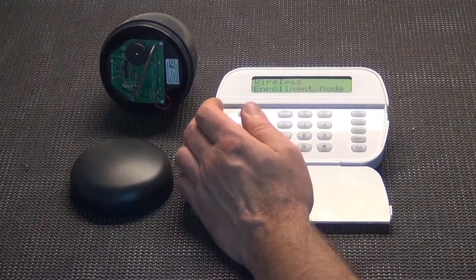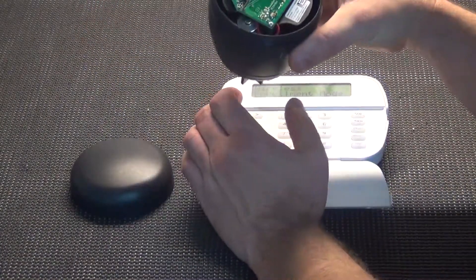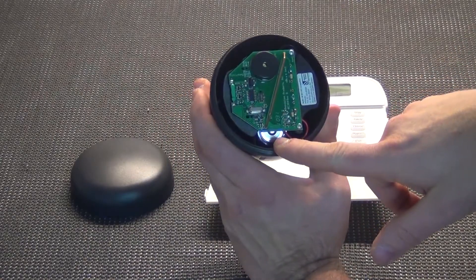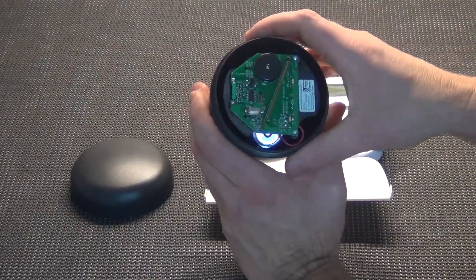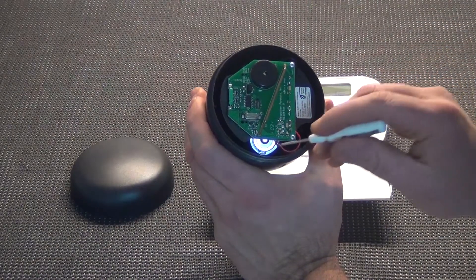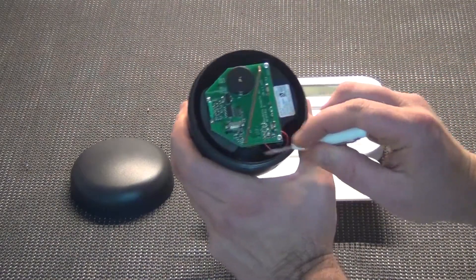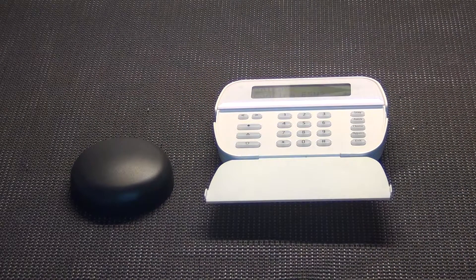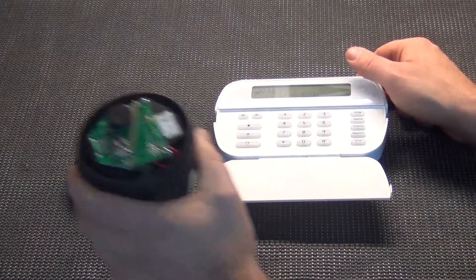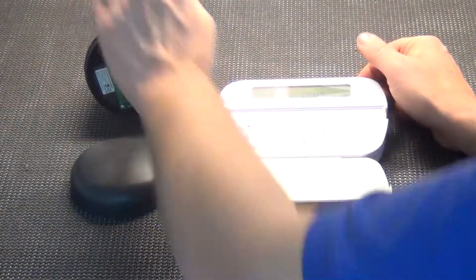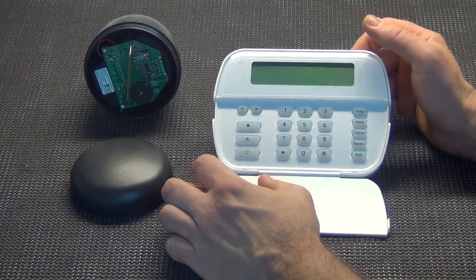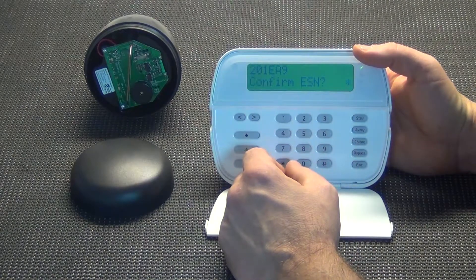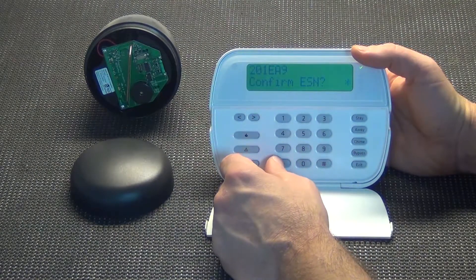Now what we're going to do on the RE304, when you power it up by inserting the battery that is loose right here, it will start sending out a special signal. So let's go ahead and put the battery in. And you can hear it sending out its signal. When we power it up, it starts sending a signal to the panel to have itself learned in. As you can see here, it read out a serial number and that is correct. It asks us to confirm the serial number, so we'll hit star.